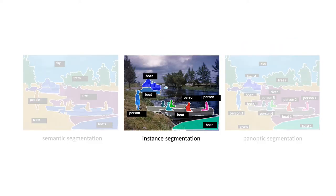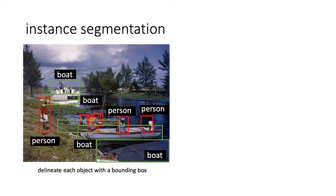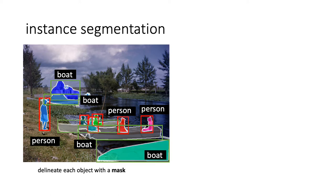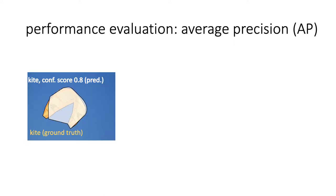Next, let's move to instance segmentation. Instance segmentation can be seen as a direct extension of bounding box detection. The goal is to find objects, but instead of putting a box around them, we delineate each object with a pixel-level mask. Unlike semantic segmentation that does not distinguish two different objects of the same category, instance segmentation requires them to be segmented separately. The common way to measure performance is average precision, or AP, which is a segment-based metric that treats all predicted objects irrespective of their size in the same exact way.